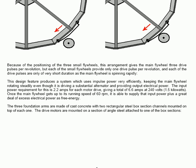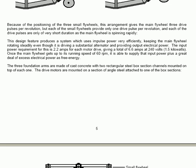The three foundation arms are made of cast concrete with two rectangular steel box section channels mounted on top of each one. The drive motors are mounted on a section of angle piece of steel attached to one of the box sections. This is the arrangement.